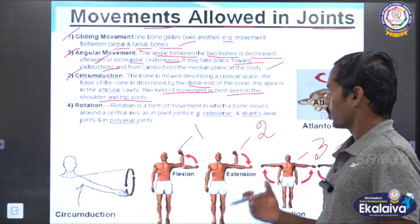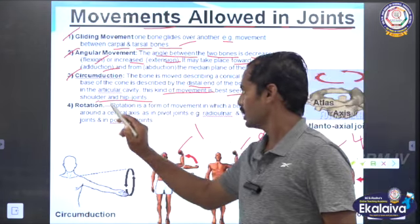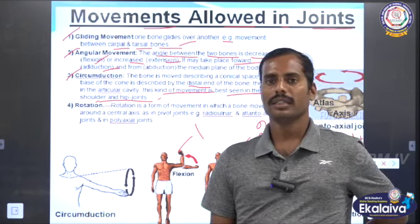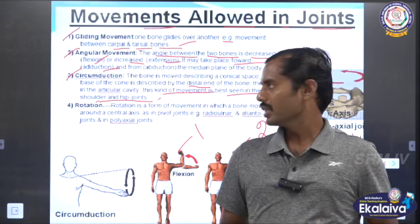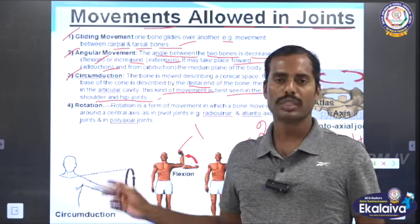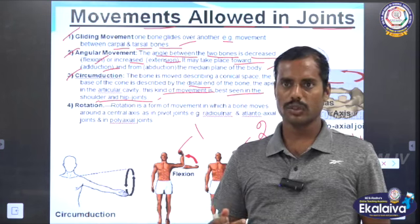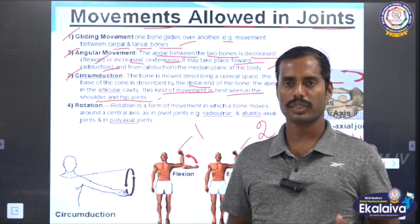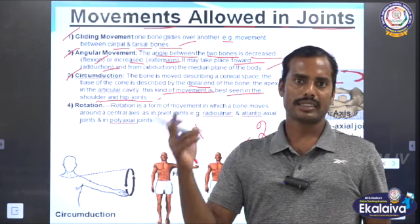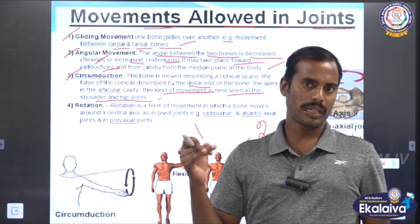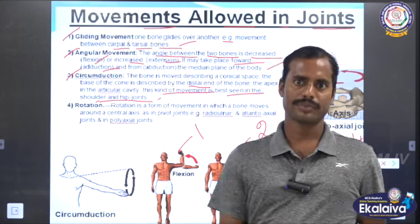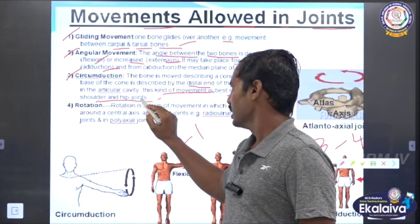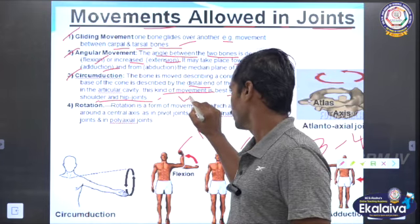The circumvention is maximum in the shoulder and hip joints. If you have all the movements — rotation, extension, flexion, abduction, adduction, and circumvention — in one place, this is the hip and the shoulder.